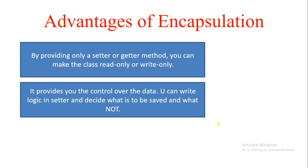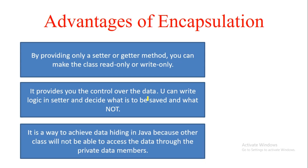The second advantage of encapsulation is that it provides you control over data. You can write a logic in setters to decide what is to be saved or not. For example, if you have an int variable with a setter and getter, you can write in the setter: if the value being set is greater than 5, then only set it — else don't. That is how encapsulation gives you control over what data is saved.